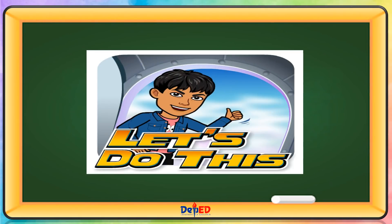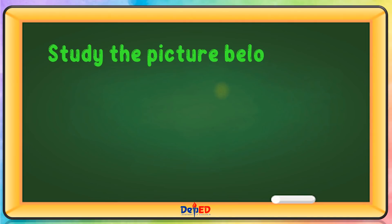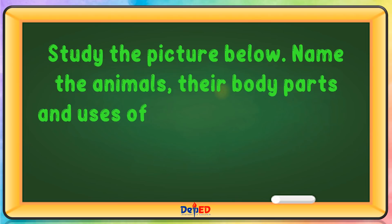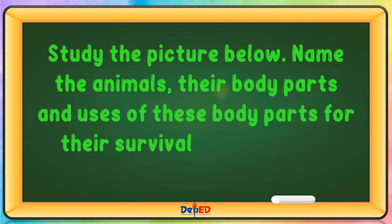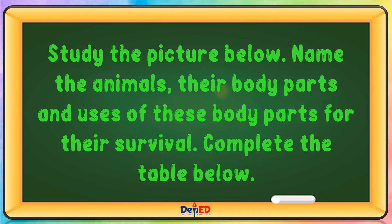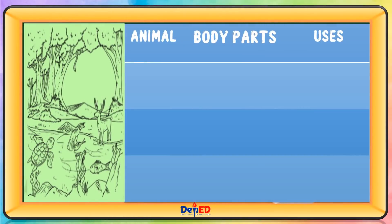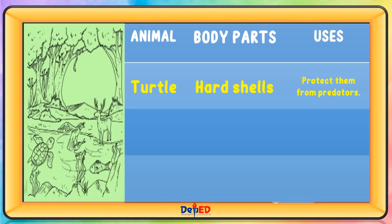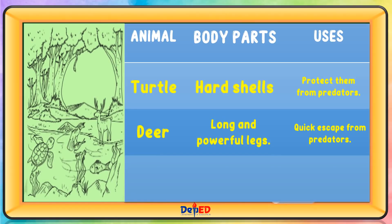Let's do this! Study the picture below. Name the animals, their body parts, and the uses of these body parts for their survival. Complete the table below. Turtle — body part: hard shell — use: protects them from predators. Deer — body part: long and powerful legs — use: quick escape from predators. Eagle — body part: sharp claws — use: to capture prey and food.